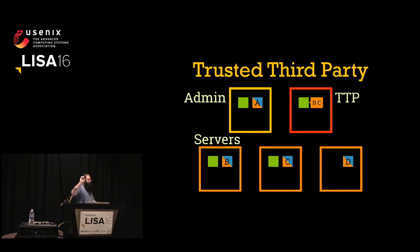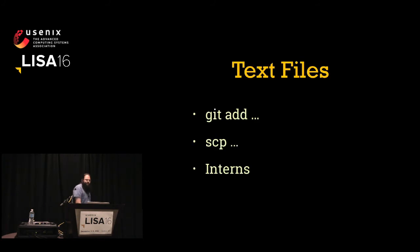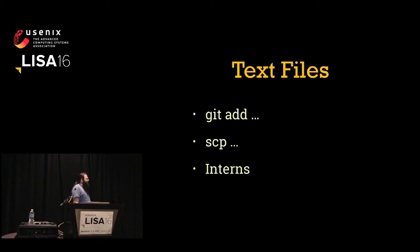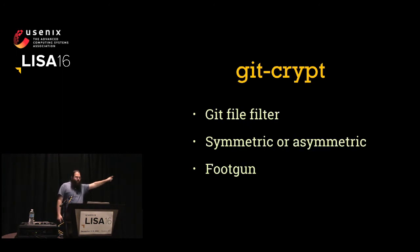Let's talk about actual tools. Text files — putting secrets in the application's repo, making a repo called secrets, or SCPing files around individually. In general, don't do this. We already talked about why.